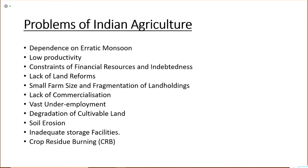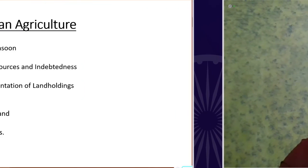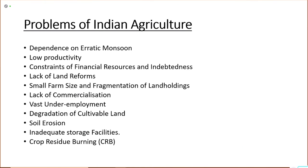Due to high population, most crops are consumed within India itself, limiting commercialization. Degradation of cultivable land is also a problem — most land is now being used for building and construction purposes, reducing agricultural land. Soil erosion, inadequate storage facilities with farmers, and crop residue burning are major problems. When farmers burn crop residue, the soil also becomes infertile.